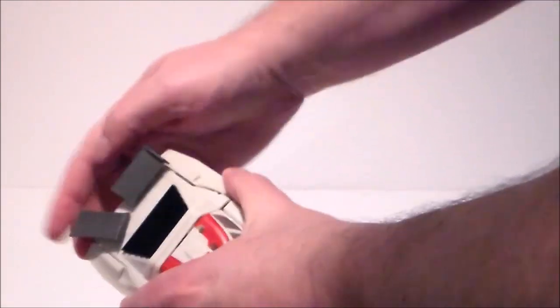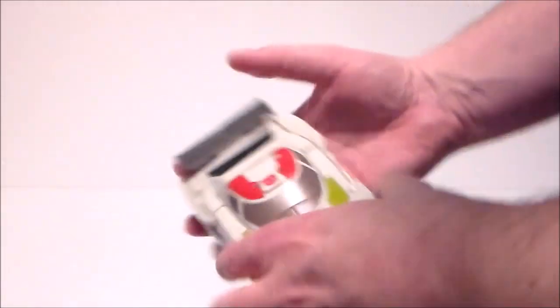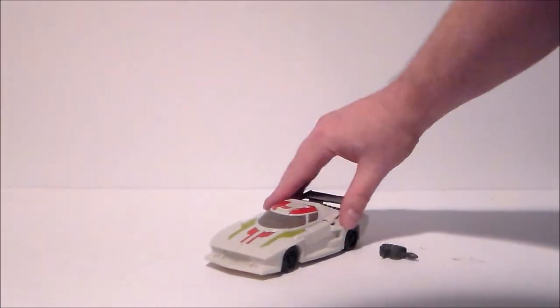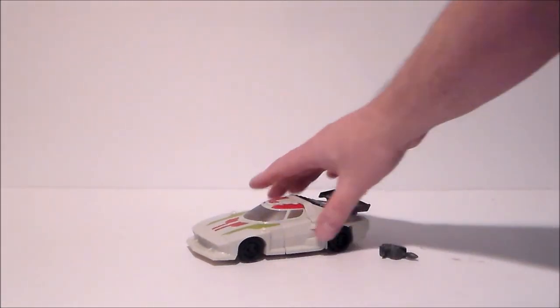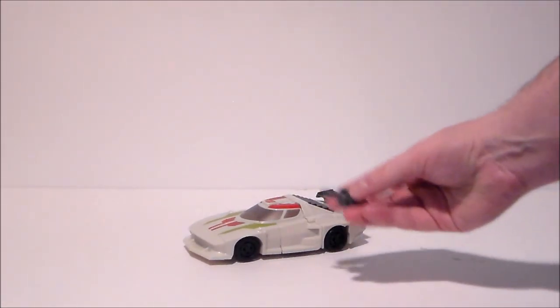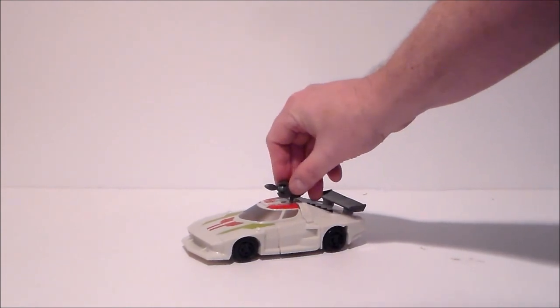Straighten out the spoiler in the back, and there is our race car mode. Looks pretty good. Then you can take the gun piece here and there's a port specifically for it on the hood.